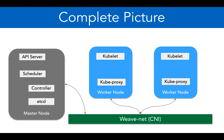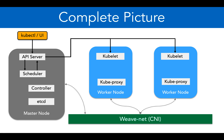Now let's say I am running a kubectl command to deploy a pod. That command is received by the API server in the master node. The API server talks to the scheduler, and the scheduler checks which worker nodes are available. It sends that information back to the API server, and then the API server sends that information to the kubelets. The kubelets will launch the individual pods. It does not necessarily mean we have to launch pods on all the nodes.